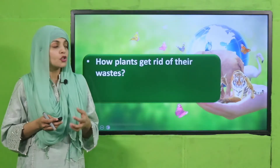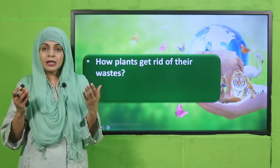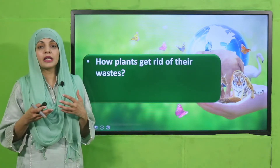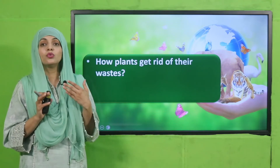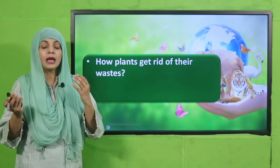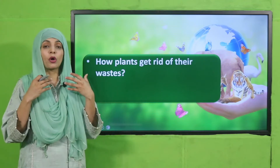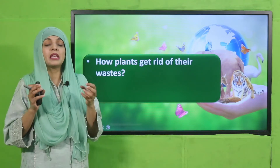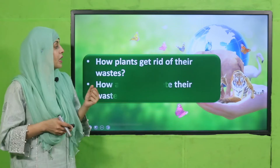Now let's move to the pre-reading question: How do plants get rid of their waste? Animals excrete in the form of feces and urination, but plants do not have that process. Plants excrete through transpiration — water evaporates through their leaves. In very hot weather, excess water or excess minerals are evaporated through their leaves and different body parts. This is how plants excrete excess substances from their bodies.